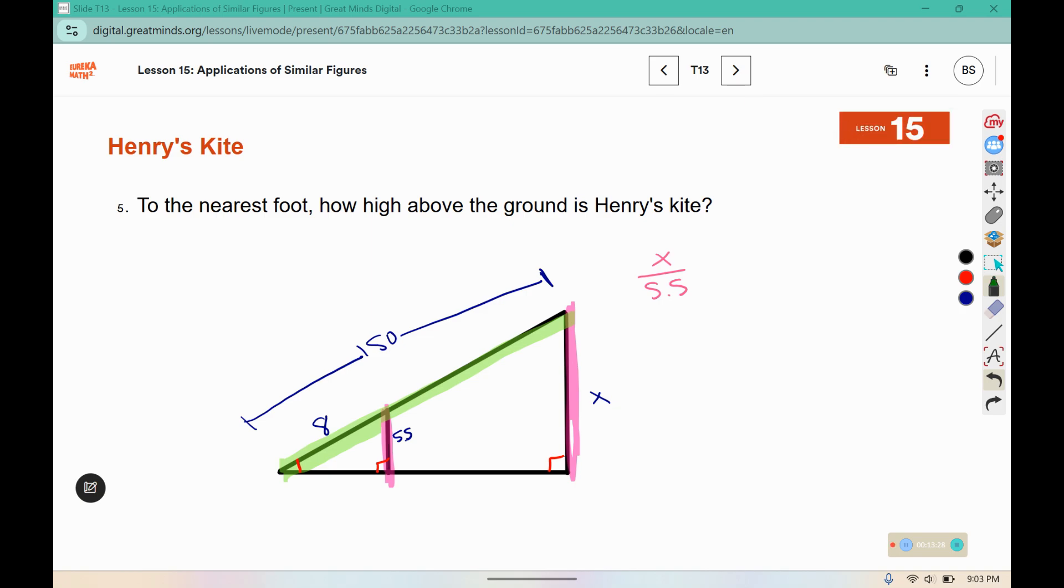Cross multiply, and for this one we are going to round to the nearest foot. So when you finish, you are rounding to the closest whole number.